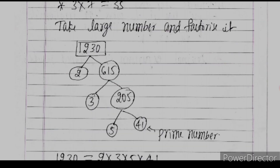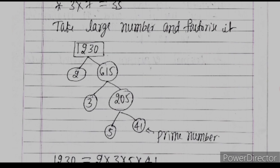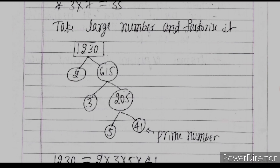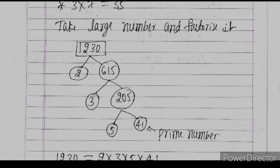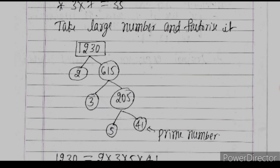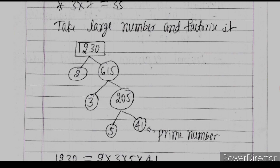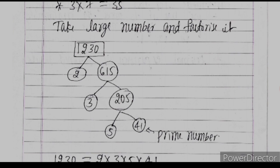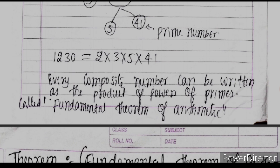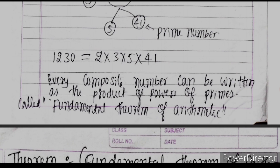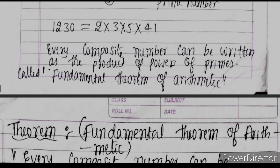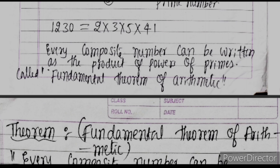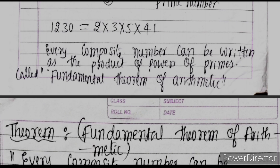Take a larger number and factorize it. For example, 1230 can be expressed through factor tree: 2 into 615, then 5 into 41, where both 5 and 41 are prime numbers. Hence 1230 = 2 × 3 × 5 × 41. Therefore, every composite number can be written as the product of powers of primes — this is called the Fundamental Theorem of Arithmetic.